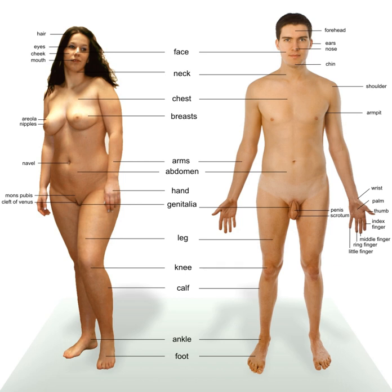The SRY activates SOX9, which forms feedforward loops with FGF9 and PGD2 in the gonads, allowing the levels of these genes to stay high enough in order to cause male development. FGF9 is responsible for development of the spermatic cords and the multiplication of SRY cells, both of which are crucial to male sexual development. The ZW sex determination system, where males have a ZZ sex chromosome, may be found in birds and some insects and other organisms. Members of the insect order Hymenoptera, such as ants and bees, are often determined by haplodiploidy, where most males are haploid and females and some sterile males are diploid.